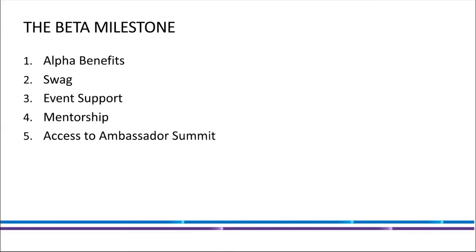You also get mentorship. In the world today, most of us tend to not have a direction, and that is what mentorship helps you with. You get mentorship from very experienced people, and that is something you should really look forward to. And then you get access to the Ambassadors Summit. This would be one of the best conferences you will attend. I attended the Microsoft Student Partner Summit a year ago and I will never forget my experience and the learnings I took home.